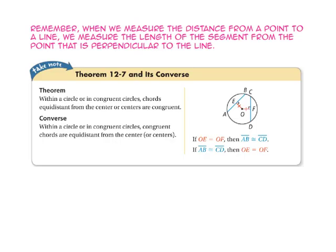The converse to theorem 12-7 states that within a circle or in congruent circles, congruent chords are always equidistant from the center. So, if we know that segment BA is congruent to segment CD, they will be equidistant from the center, meaning segment EO is congruent to segment FO.